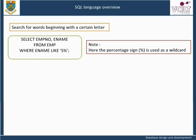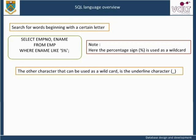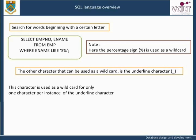The percentage sign can be used at the beginning or end of a character string, and can be used as a wildcard for any number of characters. The other character that can be used as a wildcard is the underscore character. This character is used as a wildcard for only one character per instance of the underscore character.